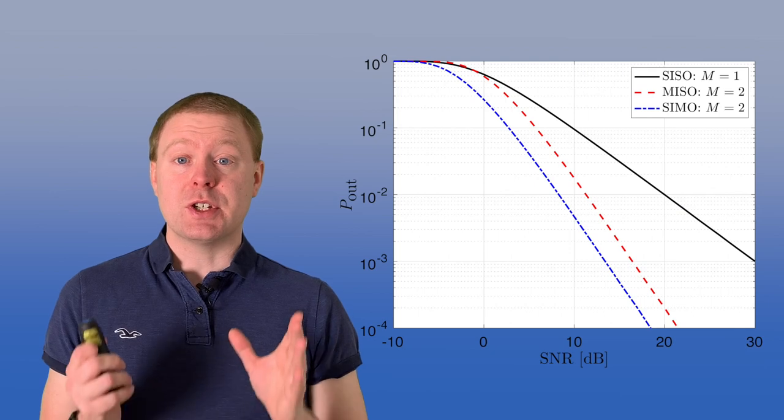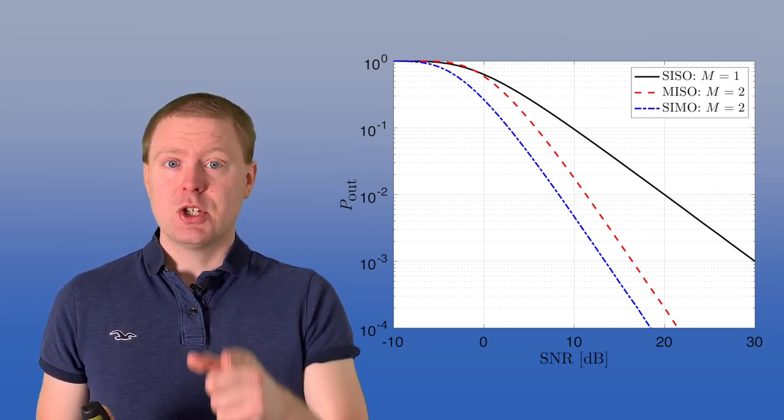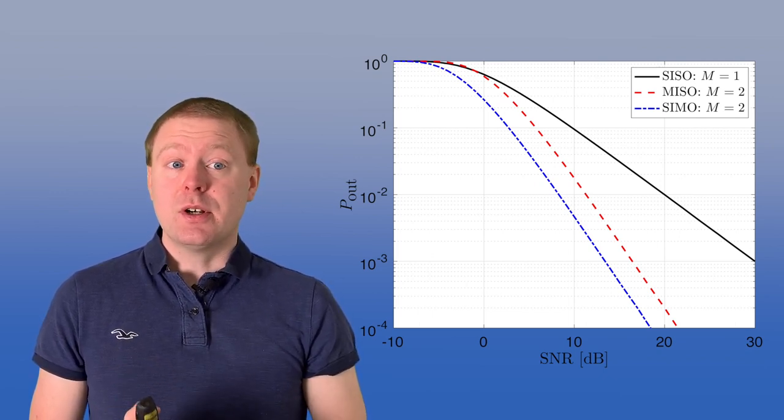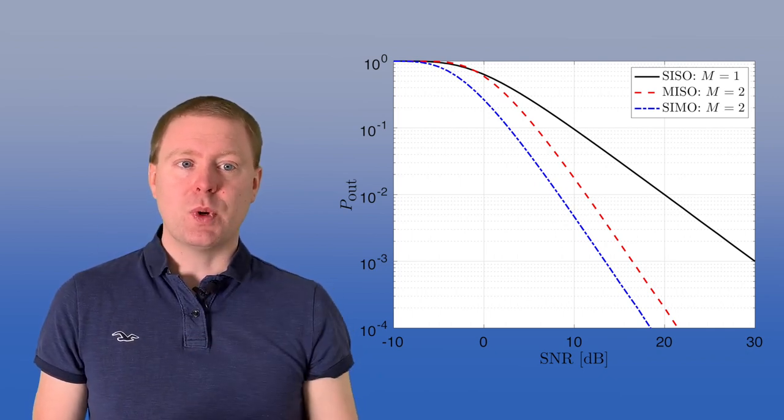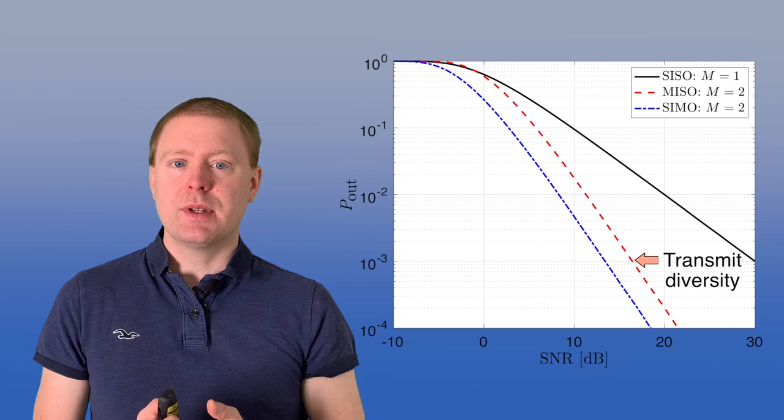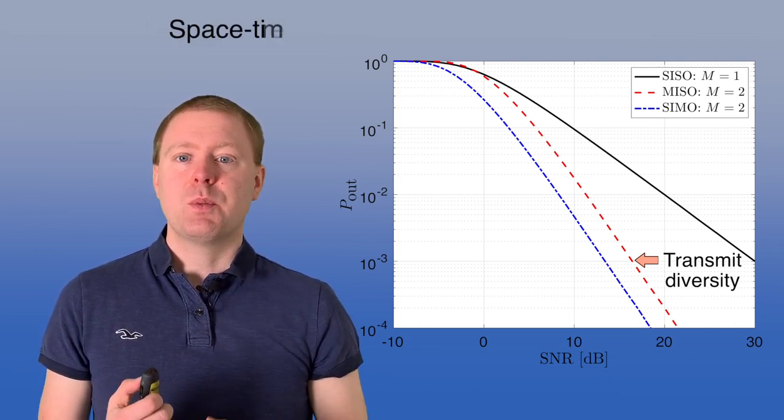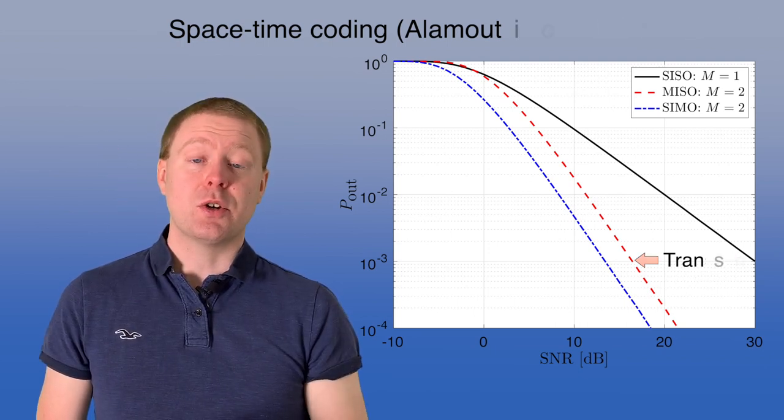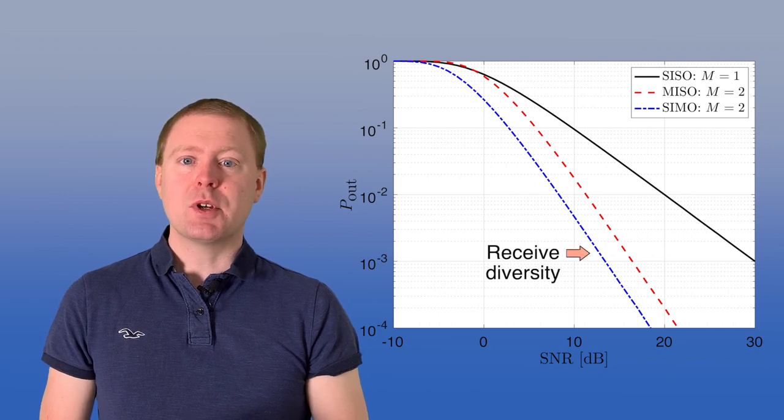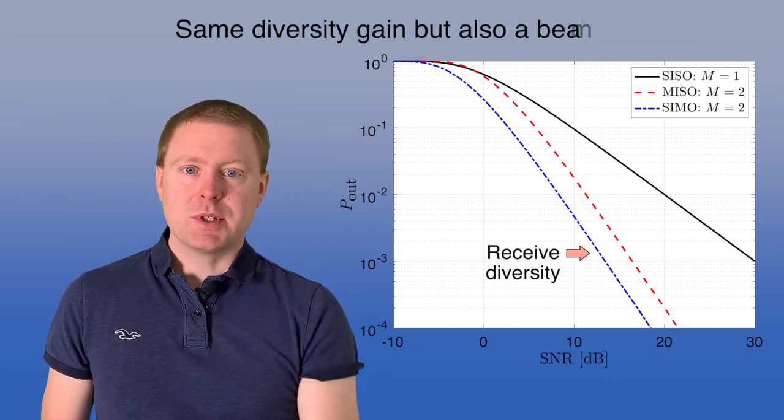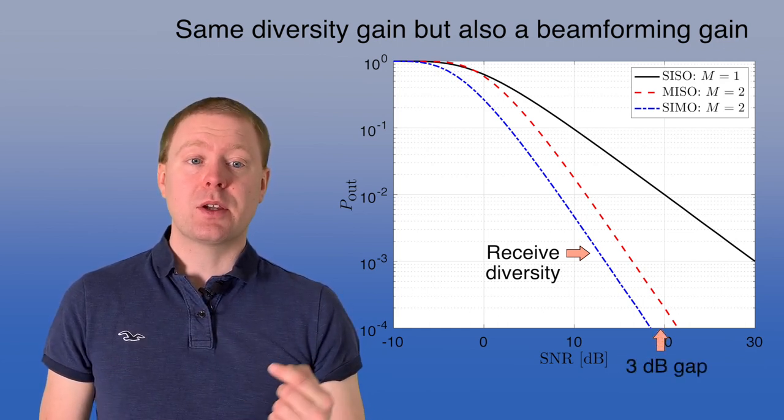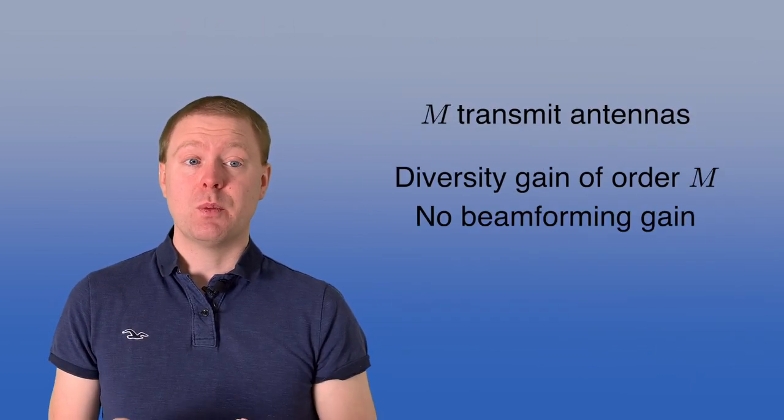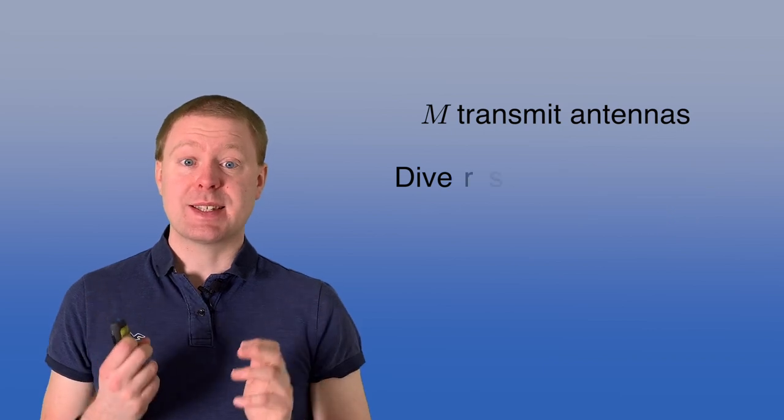Here is an illustration of the diversity gain you can achieve with multiple transmit antennas. So we have the outage probability on the vertical axis and the SNR in dB scale on the horizontal axis. The black curve is the SISO case and then we get the slope of minus one. Then if you have the red curve with space-time coding, we have two antennas. We're using something called the Alamouti code. Then you get a diversity gain because it goes down as the SNR to the power of minus two. The blue curve is the SIMO case as we described before. It has the same slope but there's also three decibel improvement going to the left and that means that we also get the beamforming gain. But we can achieve a diversity gain of order M when we have M transmit antennas if we're using space-time codes.